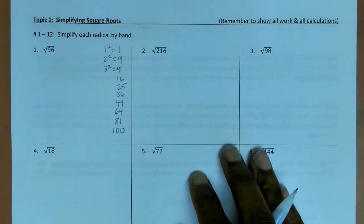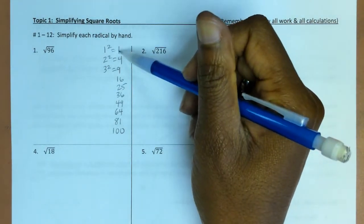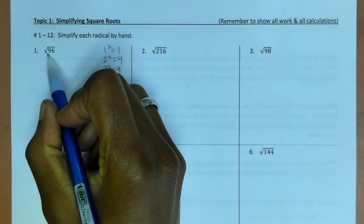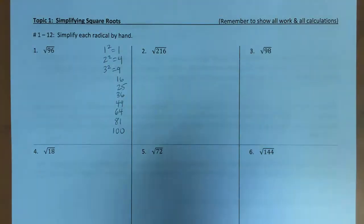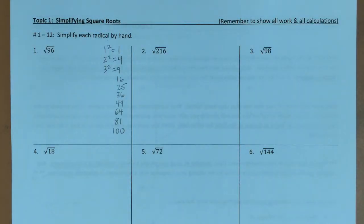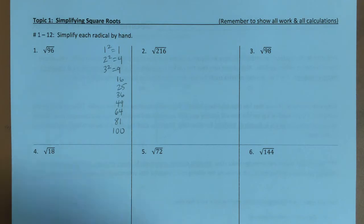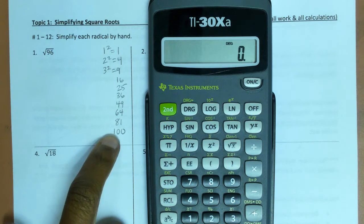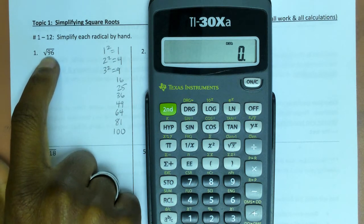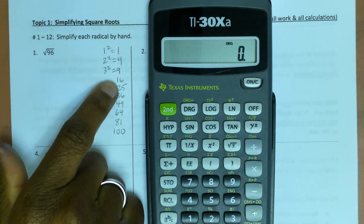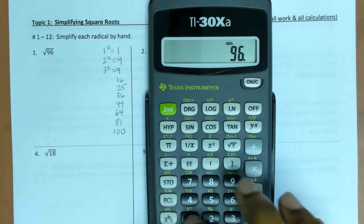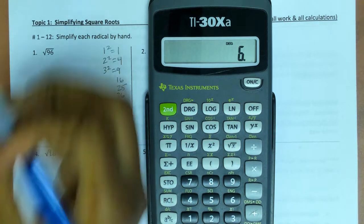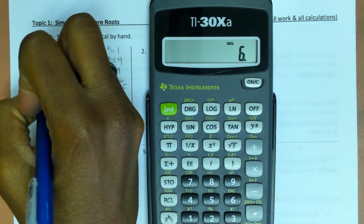When simplifying, you want to look for the largest perfect square factor for 96, or for the number underneath the radical. If you aren't sure what the perfect square factors are, you can use your calculator to guess and check. I know 100 doesn't go into 96 and 81 doesn't either, so I would try 16. 96 divided by 16 goes in evenly six times, so I can break 96 down into 16 times 6.